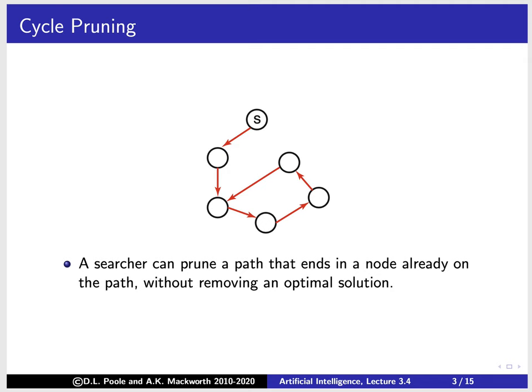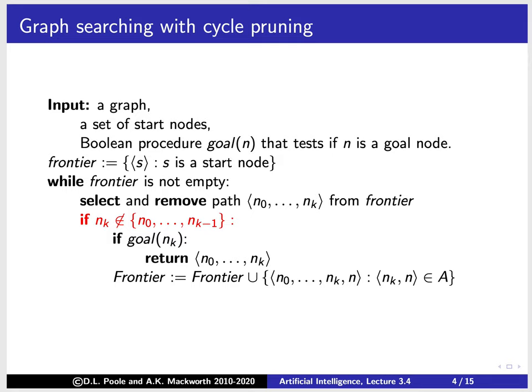Here is our generic search algorithm in black and the new parts in red. We've taken the path n0 to nk and we're only going to expand it — check if it's a goal and add its neighbors — if the last node is not an element of the set of all the preceding nodes. All we do is check whether the last node is not already in the path; if it is, we skip it and remove a different path from the frontier. This still finds an optimal solution if there is one.